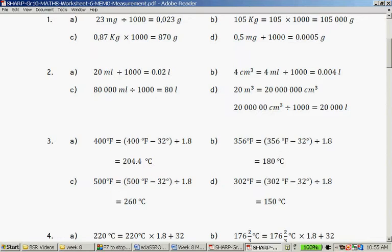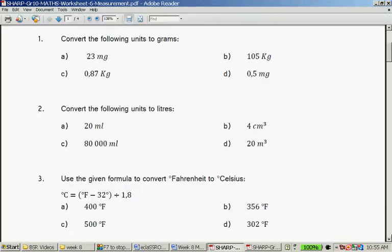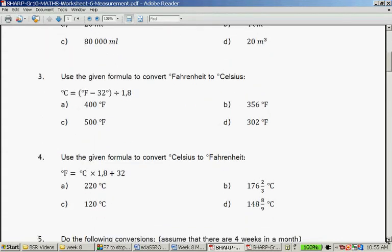356 minus 32 is 324 degrees Fahrenheit divided by 1.8 is 180 degrees Celsius. 500 minus 32 is 468 divided by 1.8 is 260 degrees Celsius. And 302 degrees Fahrenheit minus 32 is 270 divided by 1.8 is 150 degrees Celsius. Now to go from Celsius to Fahrenheit, you have a different formula. You pop in the degree Celsius, you times by 1.8 and you plus 32.